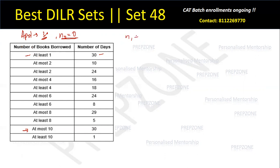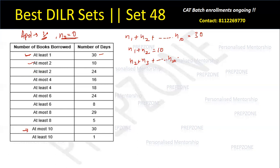'At most two' means maximum two books: so n1 + n2 = 10. 'At least two' means n2 + n3 + ... + n10 = 24. While some would be tempted to use a Venn diagram, once you see values going up to 10, you'd leave it — it becomes a 10-dimensional problem. So I have these two equations. If I sum them and subtract the first equation (n1 + ... + n10 = 30), I can isolate n2.